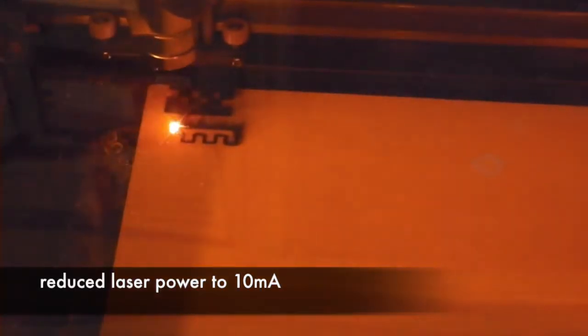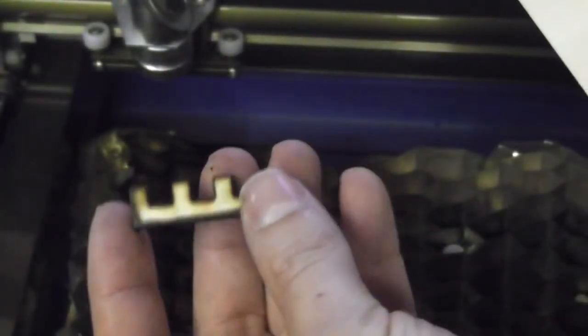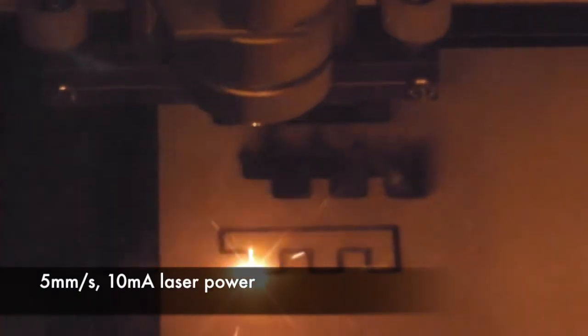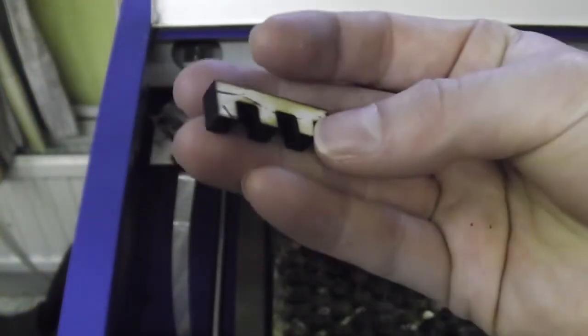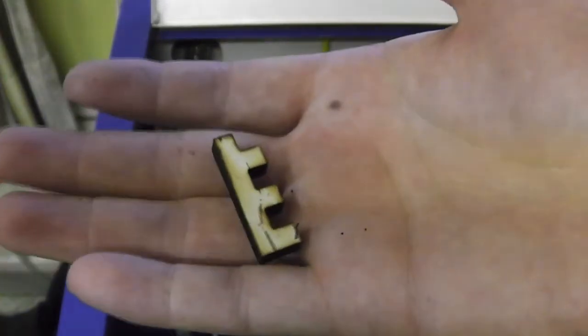It's now reading about 10mA. This stuff is cutting like butter. All I need to do is find the settings that don't cause it to look like burnt toast. 5mm a second, 10mA laser power. This stuff cuts easier than the 3mm almost. I think maybe it's the poplar.